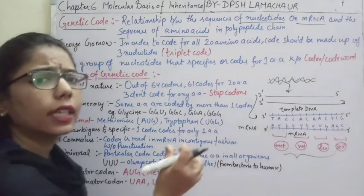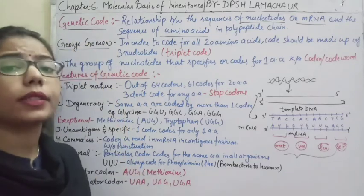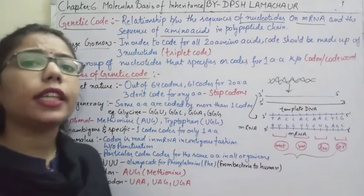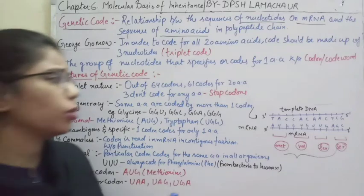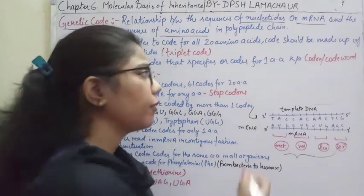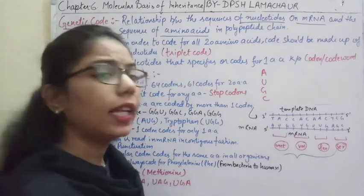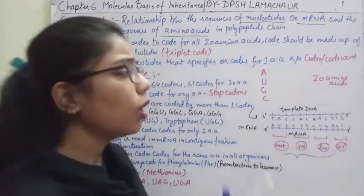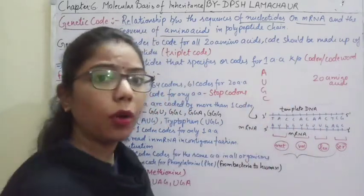Different scientists came forward to explain this. One of them is George Gamow. Previously it was assumed that only one nucleotide would form one combination. Because if we talk about the mRNA, we are having four nucleotides — A, U, G, C — and we are having twenty amino acids. So how would you form twenty amino acids with only four nucleotides? If one nucleotide codes for only one amino acid, we can only make four amino acids, but we need twenty.